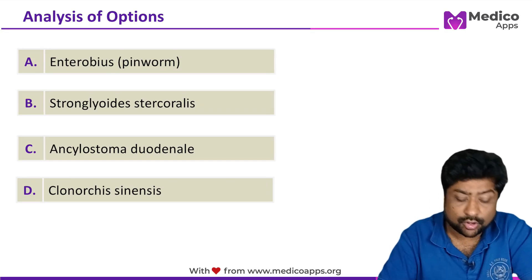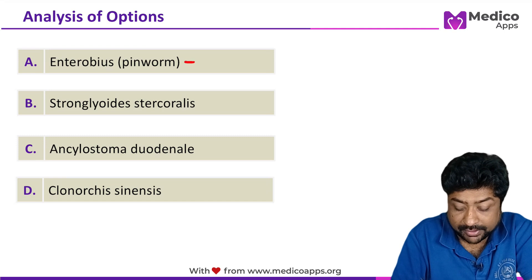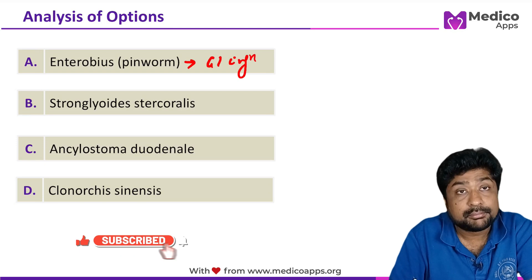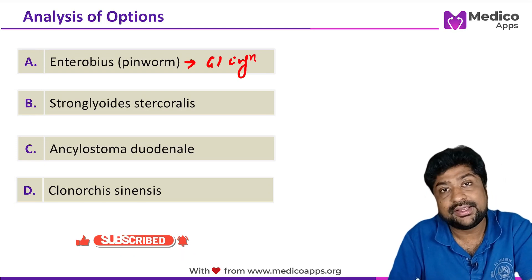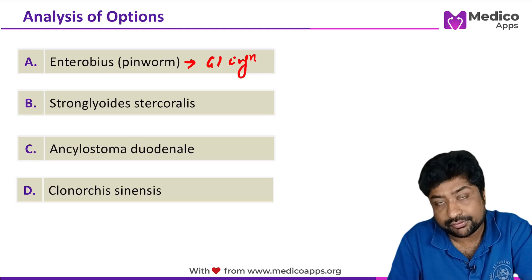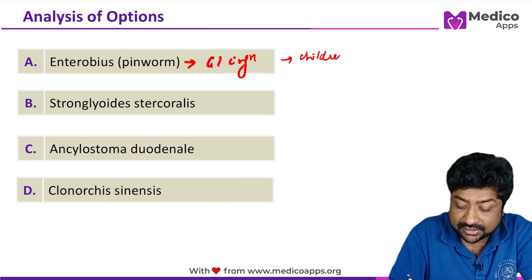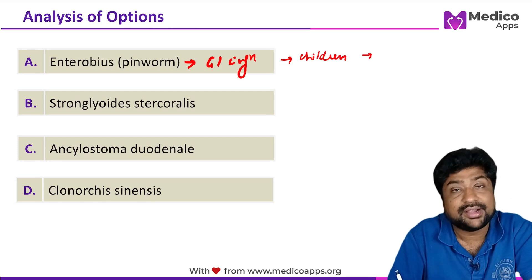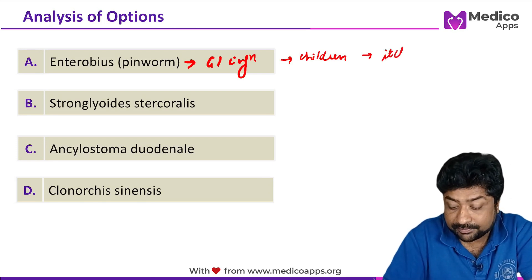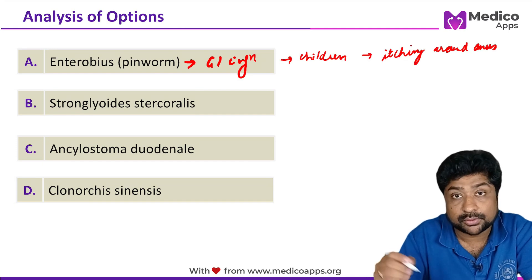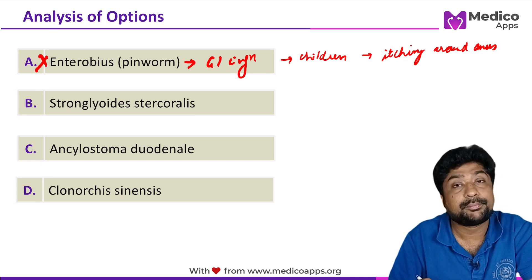Let's answer by analyzing the options. The first option is Enterobius, or pinworm — yes, it is a GI infection. However, two very characteristic findings help differentiate it from this case: first, it is primarily seen in children, and second, there is a characteristic finding of itching around the anus. Both of these are absent here, so it cannot be Enterobius or pinworm.